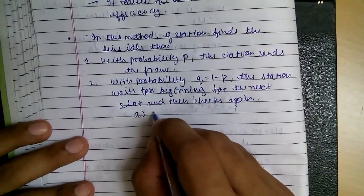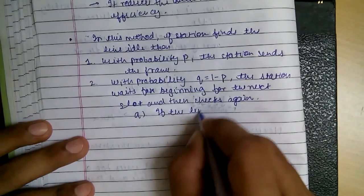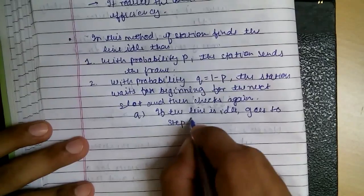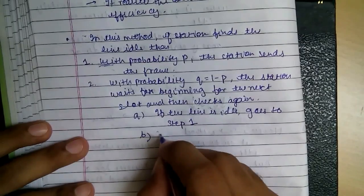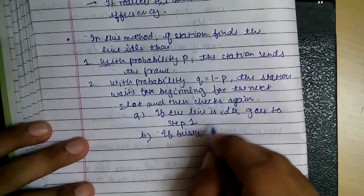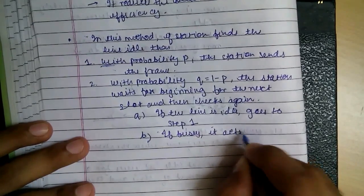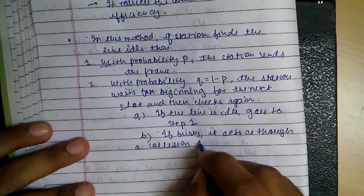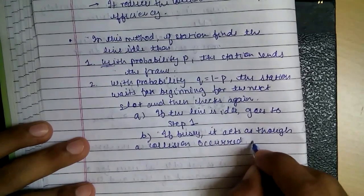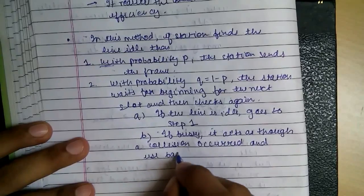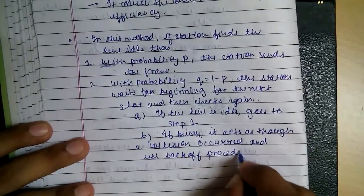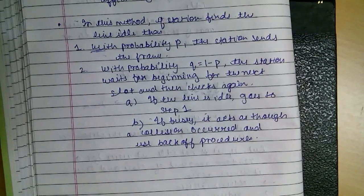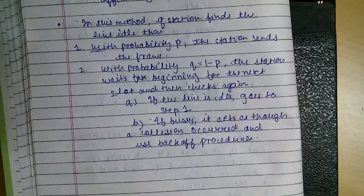Then it checks again. Now it is checking again if the line is idle, it goes to step 1, that it again with probability P, and then otherwise if busy, it considers that it acts as though a collision has occurred and uses back off procedures. So back off procedures were waiting for some amount of time, usually they are in the powers of 2. So this is how the persistence method works.